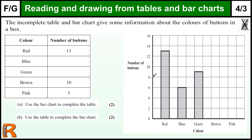So reading from the graph, this first one — 13 is a little hint there, so halfway between each one is just halfway between the numbers. So this first one, the blue, is clearly at the number 6, so we get one mark for that. And this line here is halfway between the 8 and 10, which is 9, so we get one mark for that.